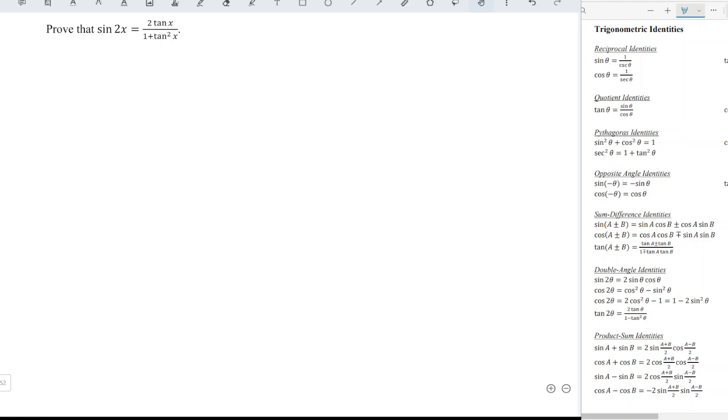I would like to share the proof of this trigonometric identity. We have left-hand side, which is equal to sine 2x. And we can apply the double-angle identity, which means that the left-hand side is now equal to 2 sine x cos x.